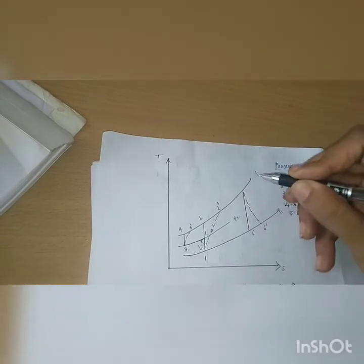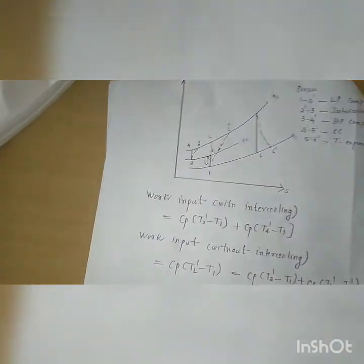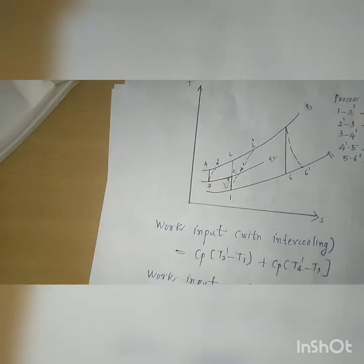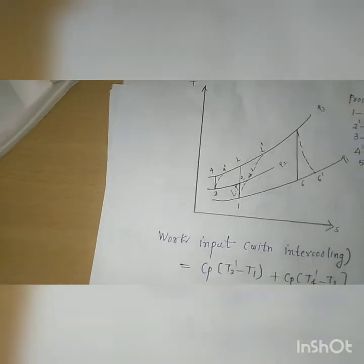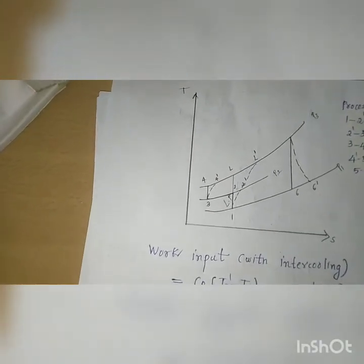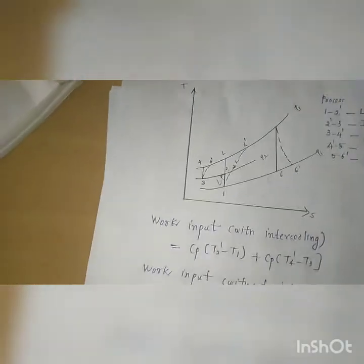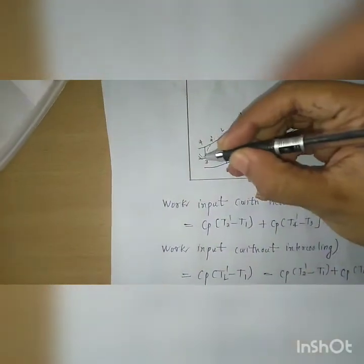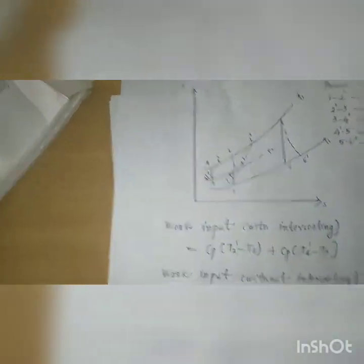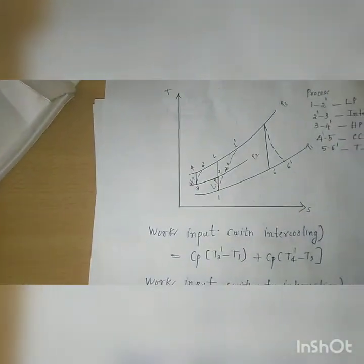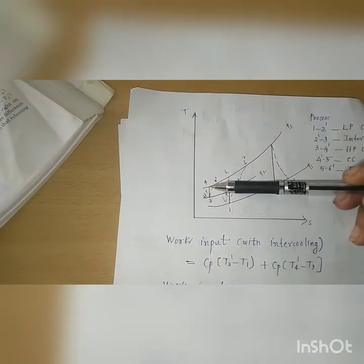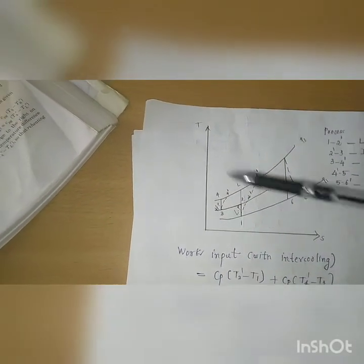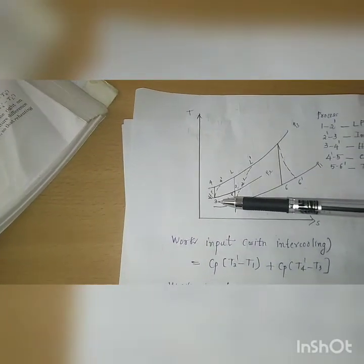We can label the pressures as P1, P2, and P3. At pressure P2, we are performing the intercooling. The intercooling reduces the temperature, and then again in the high pressure compressor — from 3 to 4 — the pressure increases from P2 to P3, and the temperature increases from 3 to 4.